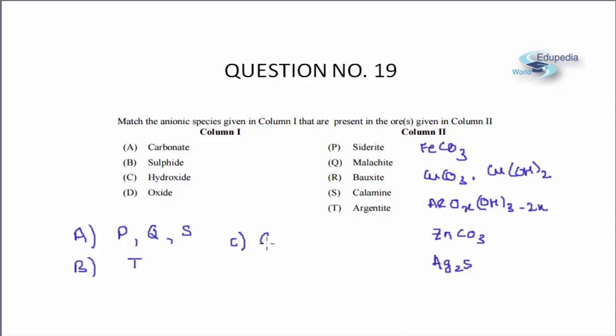So C will match with Q and R and finally if I come to D, oxide. See there is only one oxide ore that is bauxite so D will match with R.